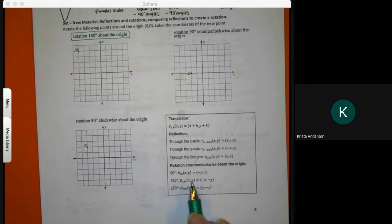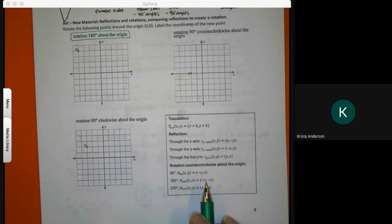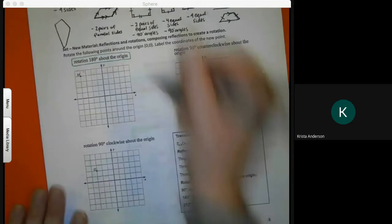That means I would use the 180 degrees from our note card. Our note card says that when we have x and y rotate 180, it becomes a negative x and a negative y. So I'm going to write my formula.